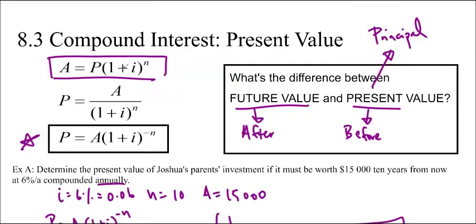So, just in summary, we just basically took this original formula for compound interest, rearranged it to find the principal instead of the final amount, and that is it.